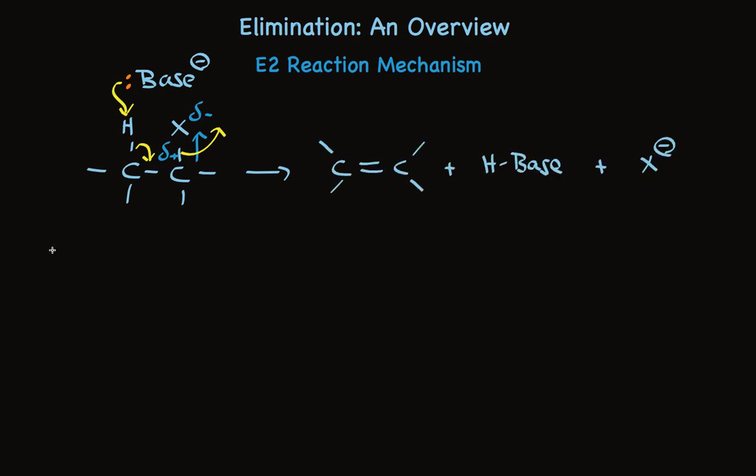There's only one step, it's the rate determining step, and there are two reactants in that step, the alkyl halide and the base. So this 1-2 elimination is termed an E2 mechanism, because there are two reactants in the rate determining step.